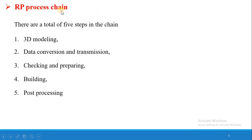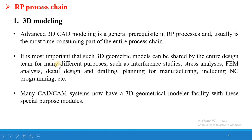Next is the Rapid Prototyping process chain — how the Rapid Prototyping process works. The RP process chain consists of 5 steps: 3D modeling, data conversion and transmission, checking and preparing, building, and post processing. Advanced 3D CAD modeling is a general prerequisite in an RP process and is usually the most time-consuming part of the entire process chain.